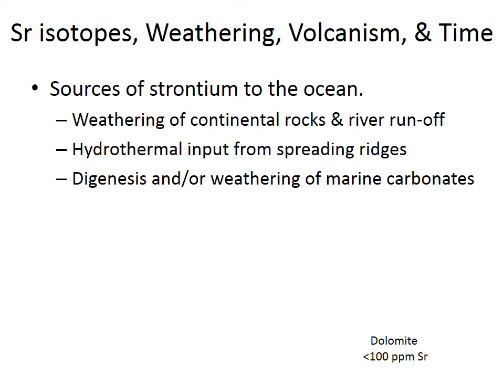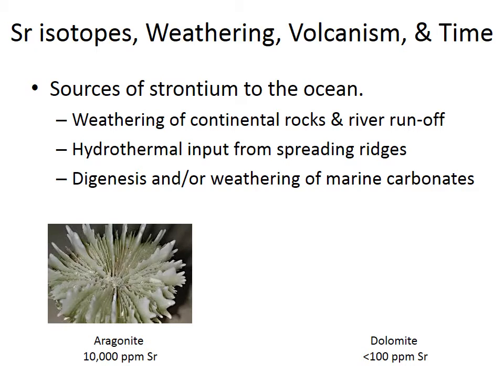Where does the ocean get its strontium? There are three main sources: continental rock weathering puts strontium into rivers that enter the ocean; hydrothermal activity at mid-ocean ridges brings in strontium from volcanic rocks; and there's a third term — diagenesis of sediments — which brings a different kind of source of strontium to the ocean.